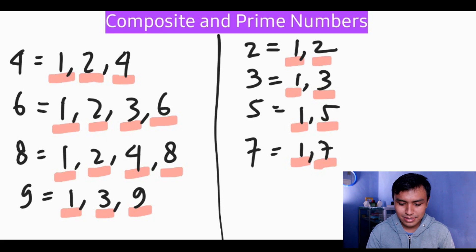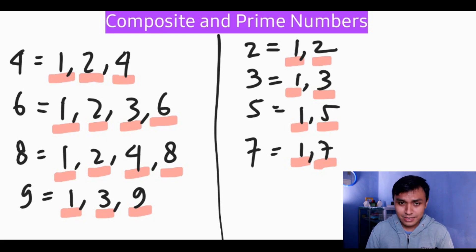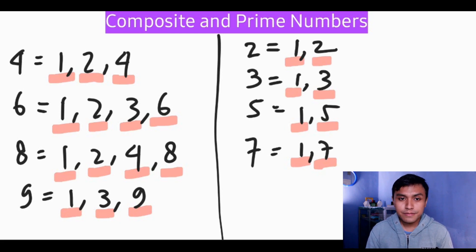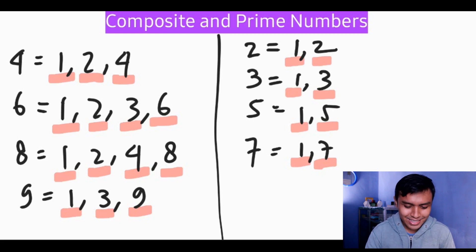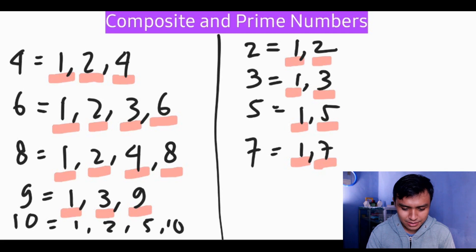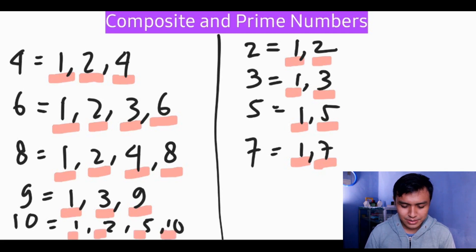Now the last number: ten. The factors of ten are one, two, five, and ten — so it is a composite number. We place it in the composite column and underline the factors: one, two, five, and ten.